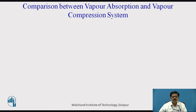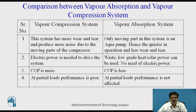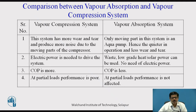Now let us see what is the difference between vapor absorption and vapor compression system. In this table, as we have already seen the working of both vapor compression as well as vapor absorption system, the major change as compared to the vapor compression system in vapor absorption system is that in vapor absorption system, we do not use the compressor. Whereas in case of vapor compression system, we use the compressor for compressing the refrigerant coming out of the evaporator.